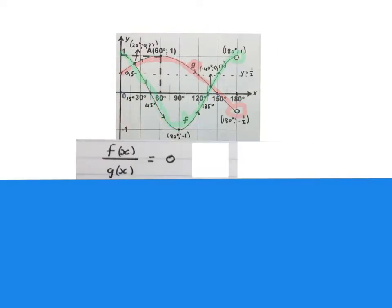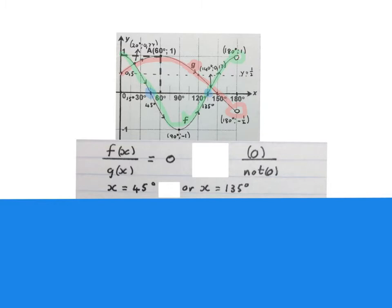The next question asks where is f of x divided by g of x equal to zero. In a division question, the denominator cannot equal zero — the numerator can be zero and must be zero. So the answer is x equals 45 degrees or x equals 135 degrees.